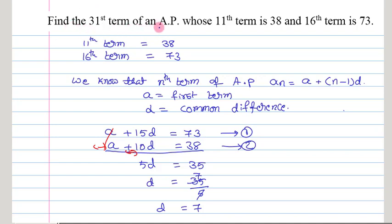Find the 31st term of an AP whose 11th term is 38 and 16th term is 73. Here we need to find out the 31st term and let us see how we are going to solve this problem.